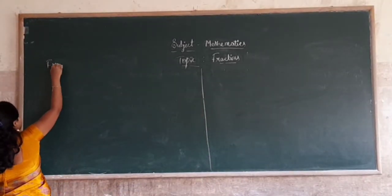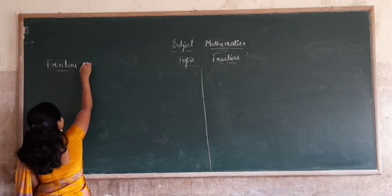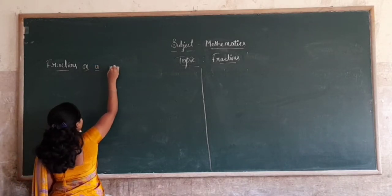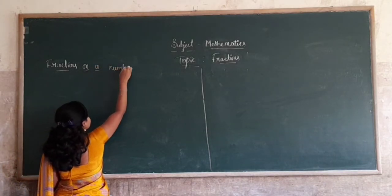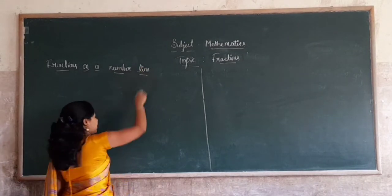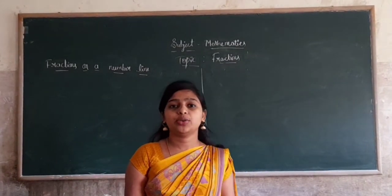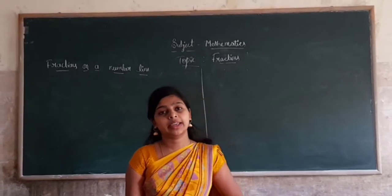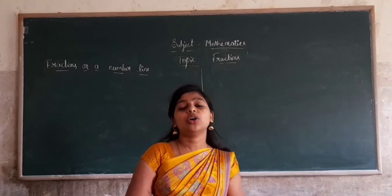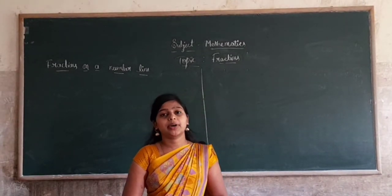First, fractions on a number line. We learnt to show all numbers like 0, 1, 2, 3 and so on on a number line, in the chapter on all numbers. We can also show fractions on a number line.